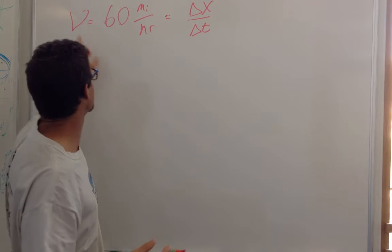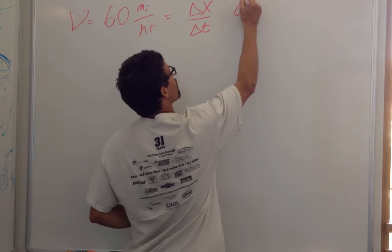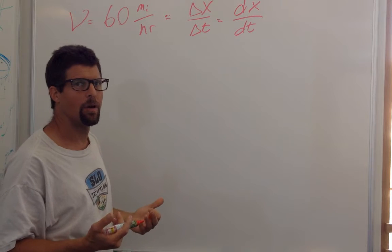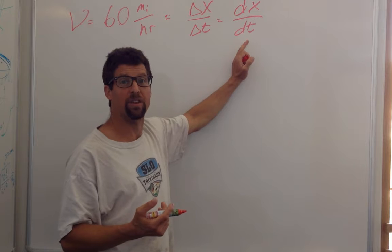your instantaneous speed, your instantaneous velocity, is the derivative of displacement. Your instantaneous velocity is the derivative of position.